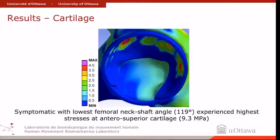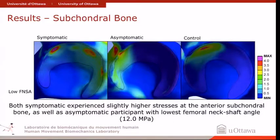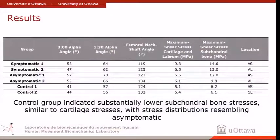The lower neck shaft angle group had the highest cartilage stresses at 9.3 megapascal. But looking at the subchondral bone in that same patient, the stressors were significantly higher in the subchondral bone compared to the cartilage area in both the symptomatic and asymptomatic sides. In summary, across all groups comparing neck shaft angle and symptomatic versus asymptomatic, the stresses on the bone are significantly higher than in the cartilage.